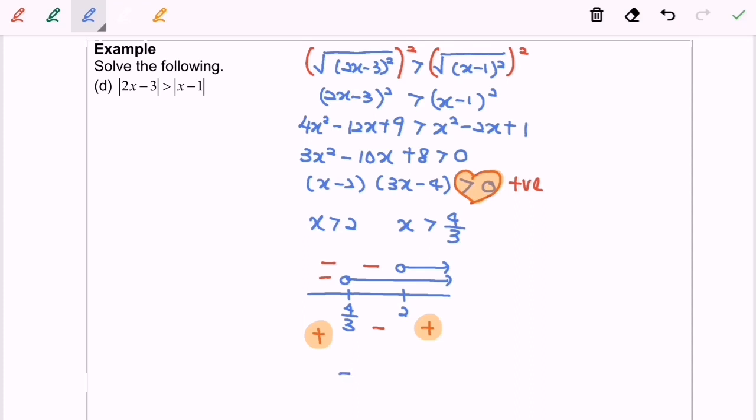So finally, negative infinity until 4 over 3 where the 4 over 3 is not included, union, 2 until infinity where the 2 is not included.